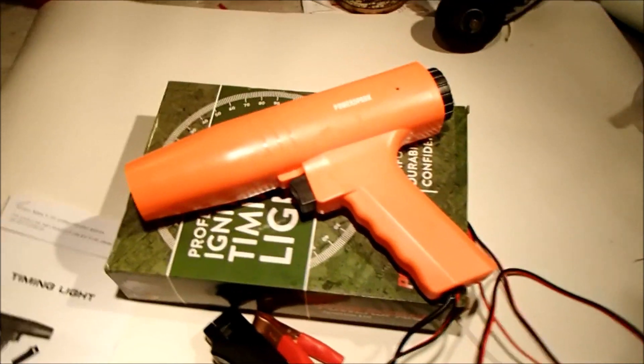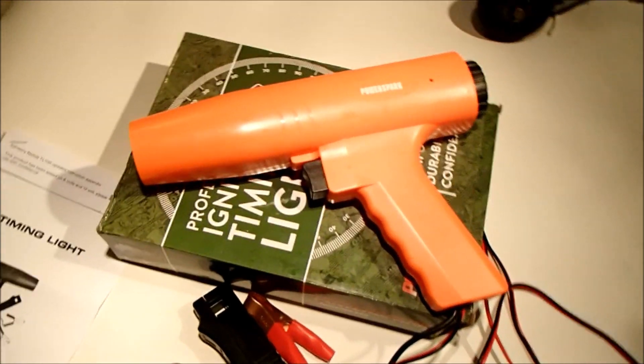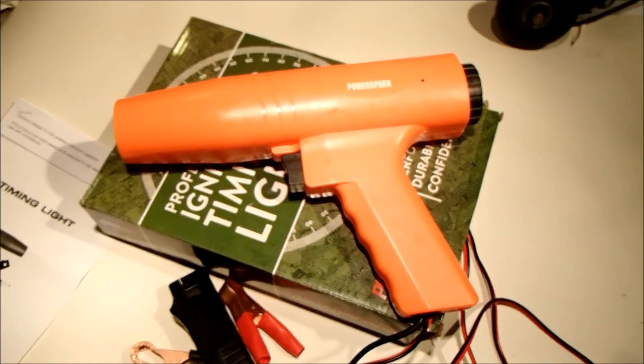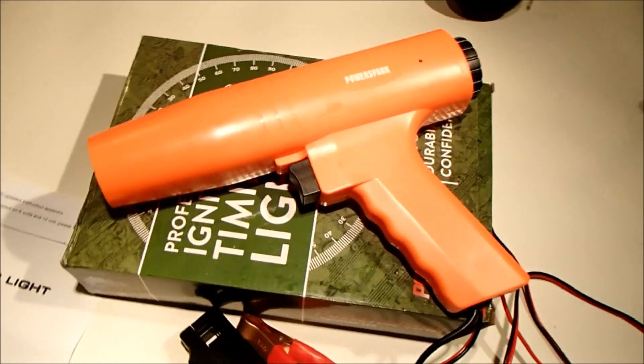One point of note with this ignition timing gun is that if you're running it on six volts, the lamp itself is a little bit dim and difficult to see in broad daylight, much easier to see when you're in the garage or in the shed.